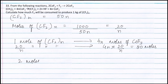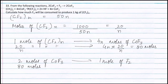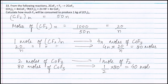As seen from the balanced equation, 2 moles of COF₃ is produced from 1 mole of F₂. Therefore, 80 moles of COF₃ will be produced from ½ × 80, which equals 40 moles of F₂.